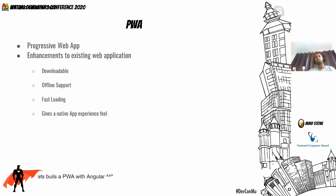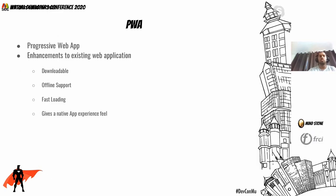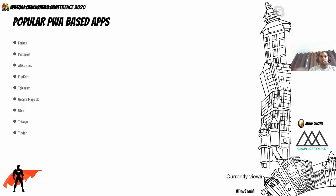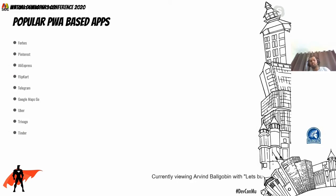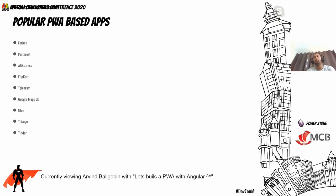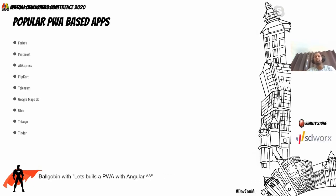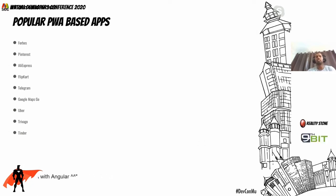We have companies already using PWA to provide a better user experience. Here are a few who have shared interest and developed their own PWA assets: Forbes, Pinterest, Aliexpress, Flipkart, Telegram, Uber, Trivago, Tinder — and many others. These are just a few which are highly rated based on progressive web application adoption.